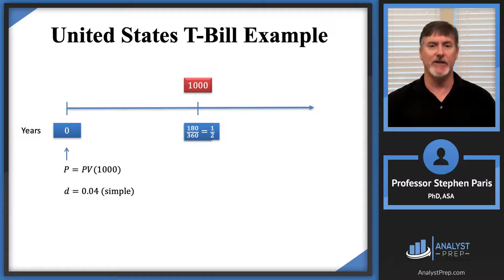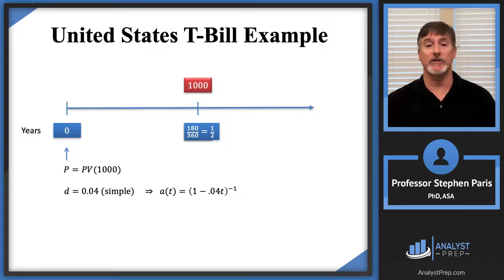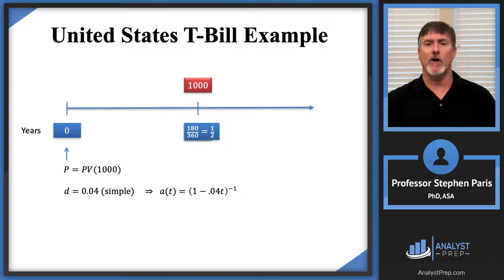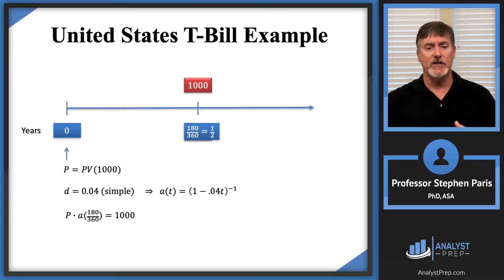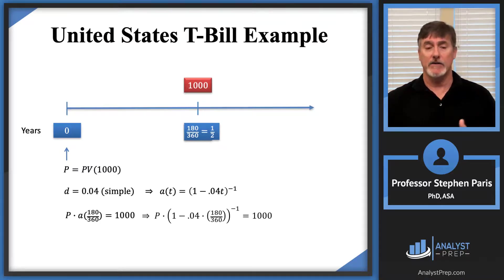A simple discount rate of 4% tells me that the accumulation function is (1 − 0.04t)^(−1), or the reciprocal of (1 − 0.04t). The equation to solve is the same form as with the Canadian T-Bill: if I accumulate the price P for half a year, I set that equal to the redemption value. So P times the accumulation function evaluated at 180/360 equals 1,000. Plugging in one-half gives the equation, and solving for P gives P = 980 exactly.